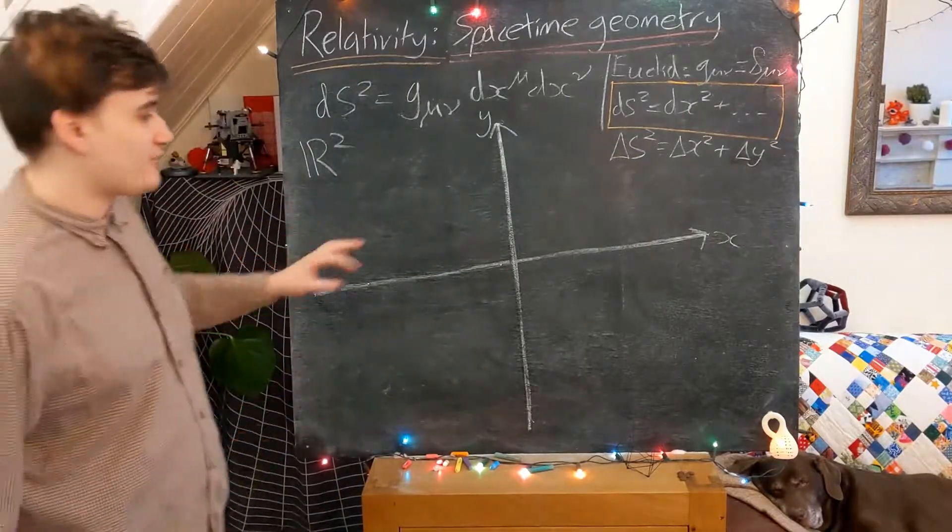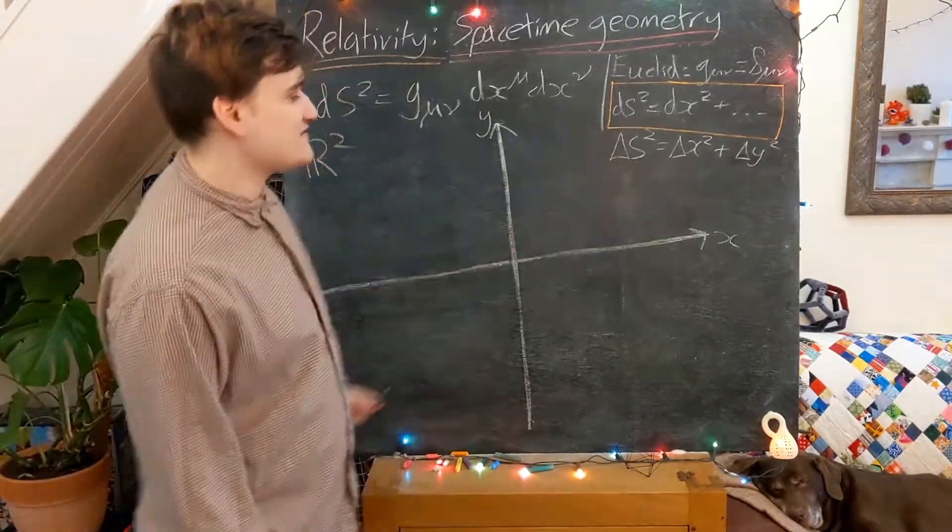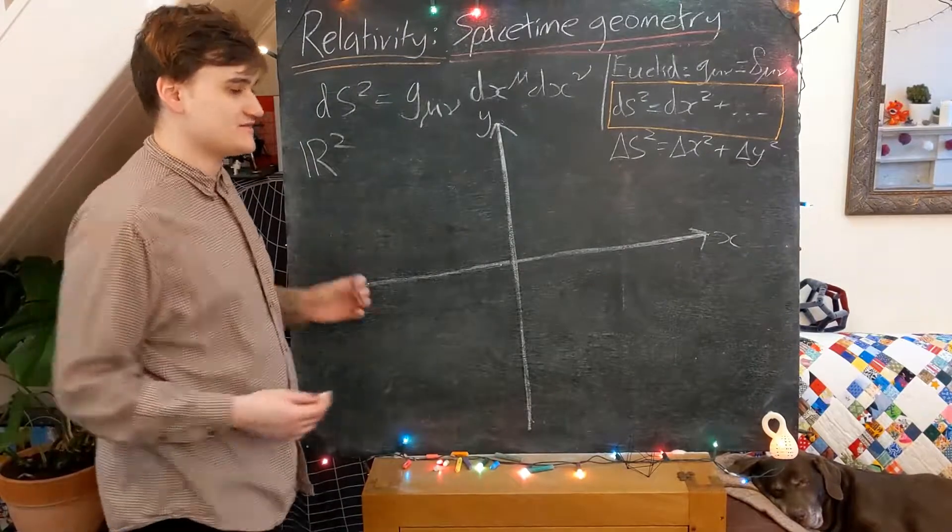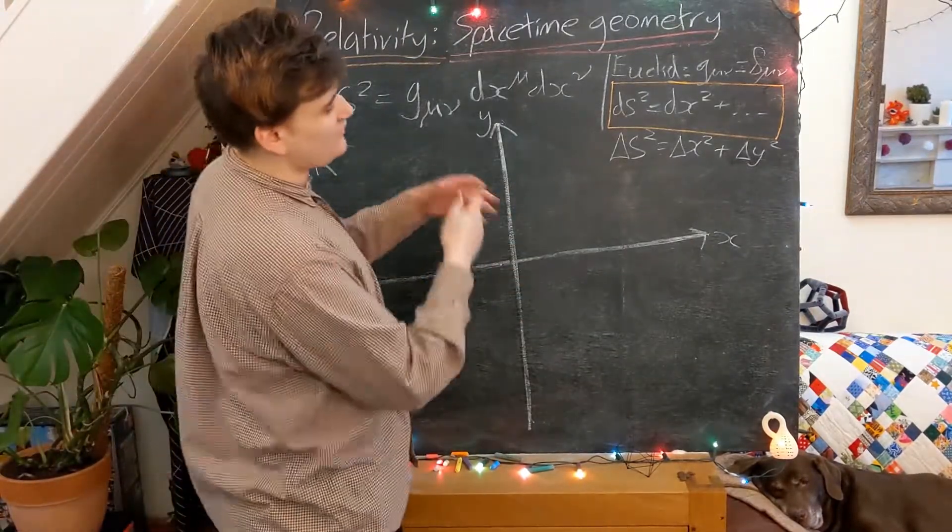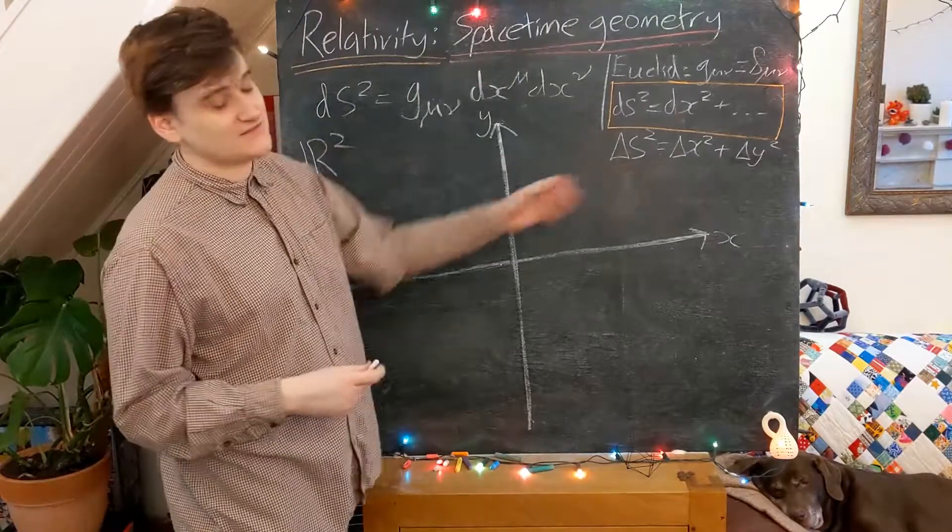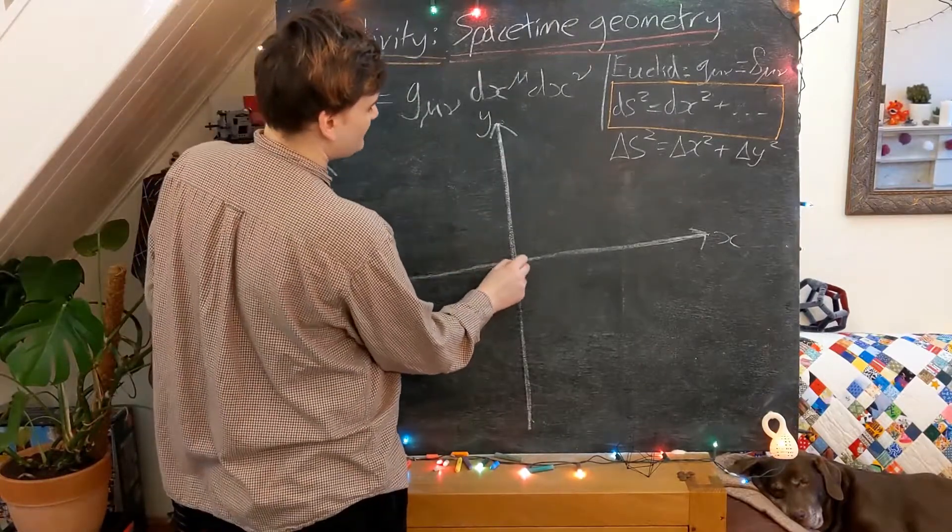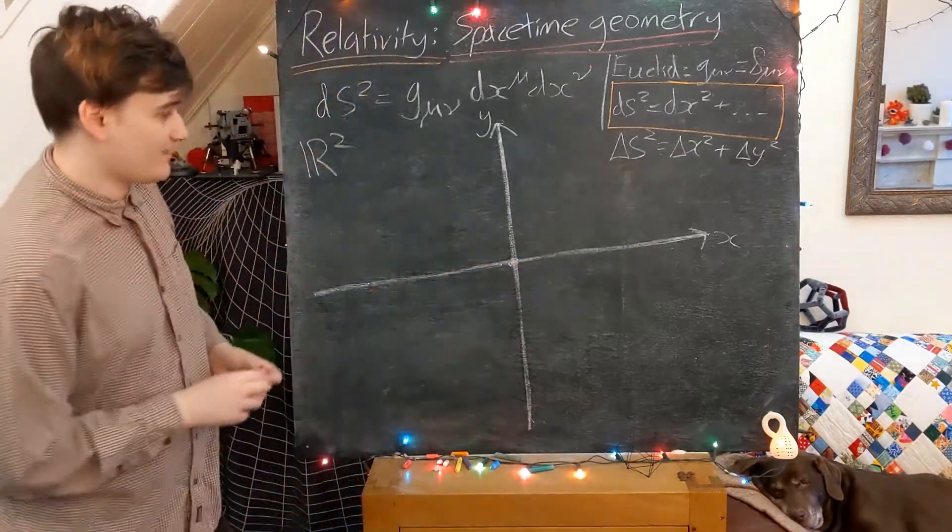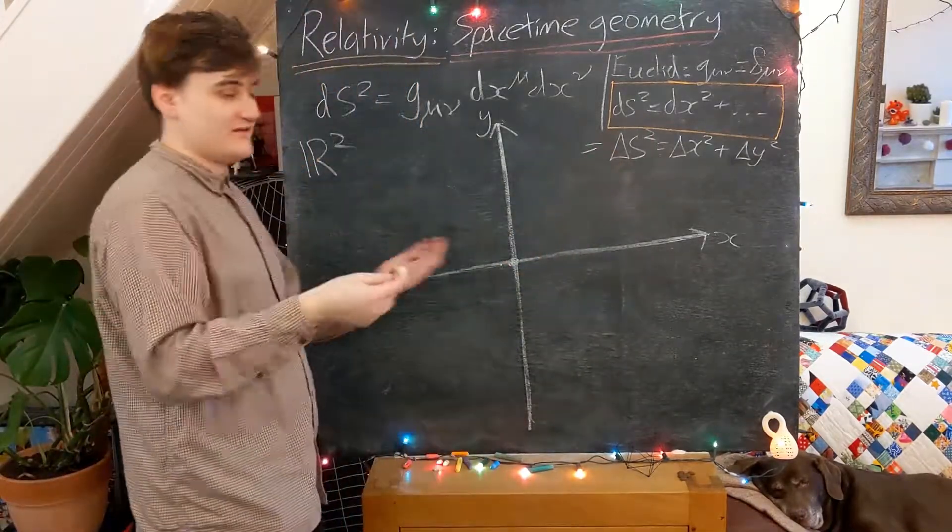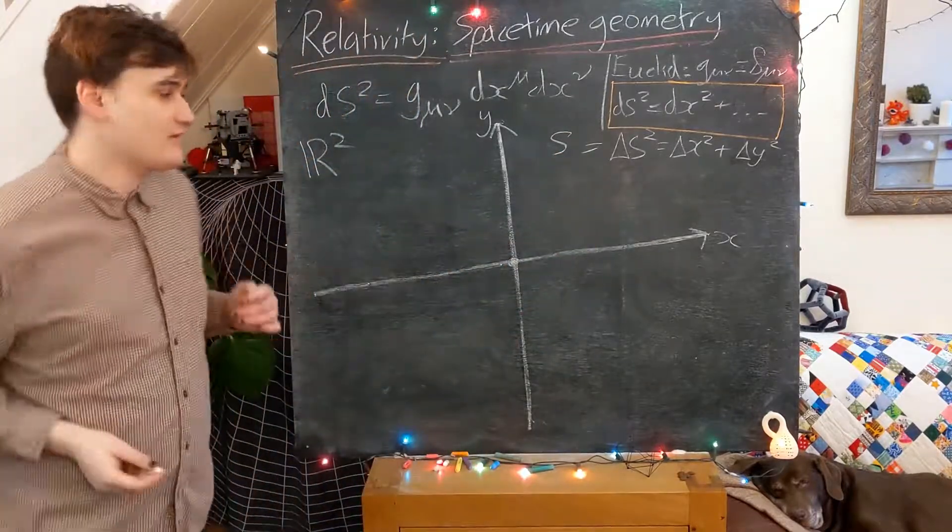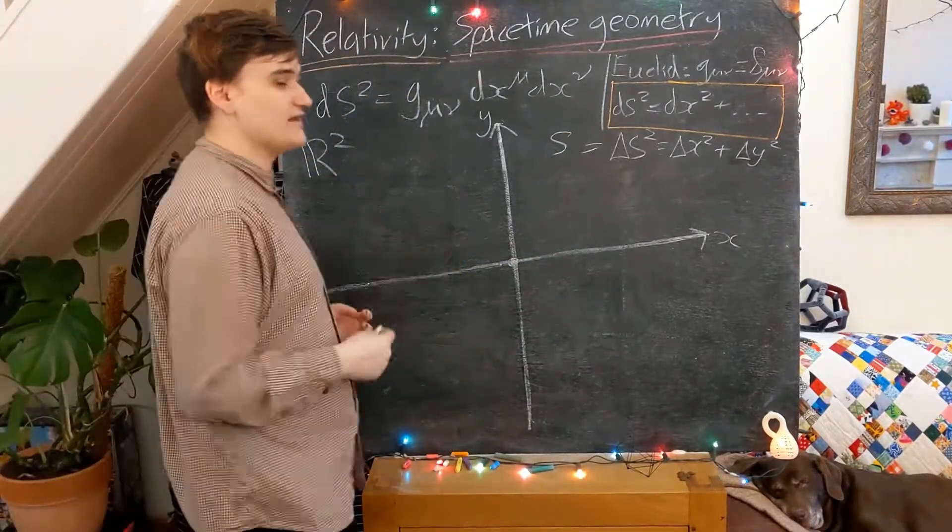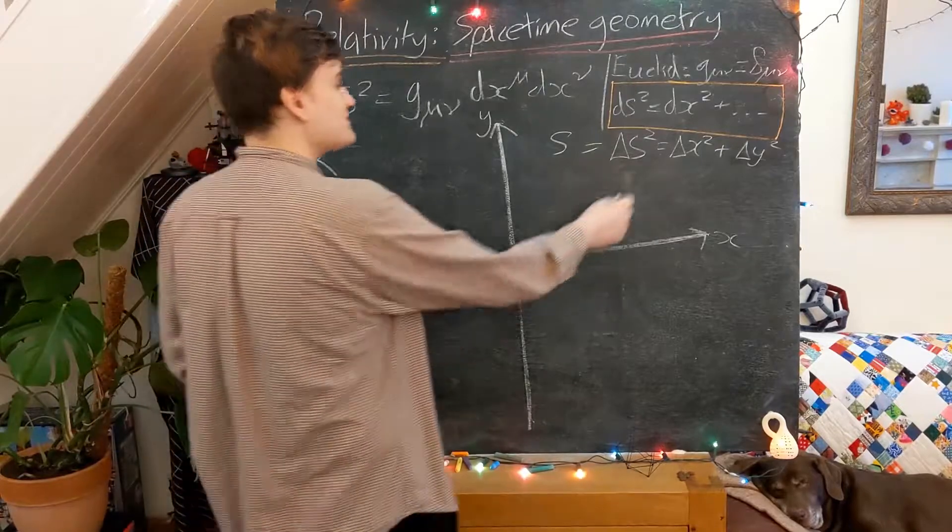One way that we can probe this line element is essentially looking at subsets of points in the space for which essentially the line element distance from the origin is going to be some constant value. So essentially we just set delta s squared equal to some constant, let's just call it s, and then we study, or we look at, all of the points.